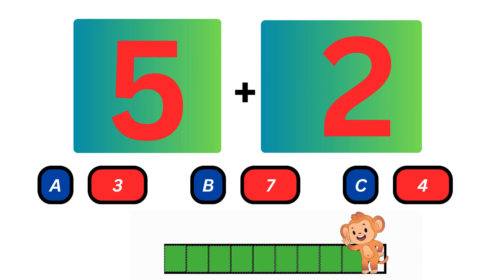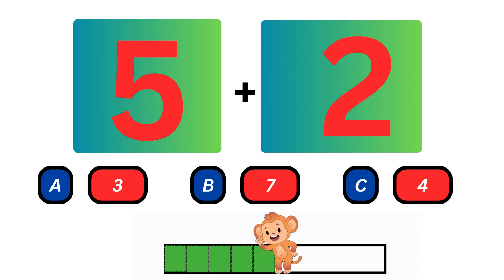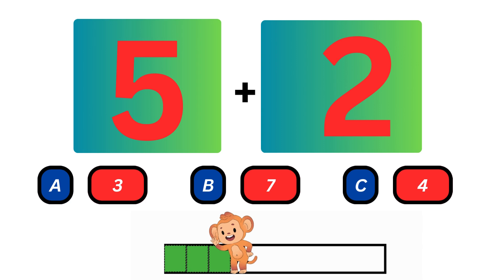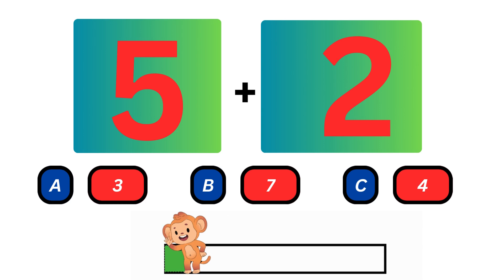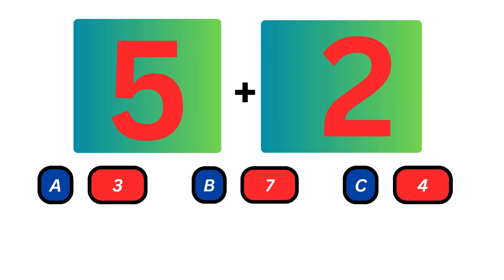What do you get when you add 5 and 2? Use your fingers or some objects for this addition. I hope you got the right answer. When you add 5 and 2 you get 7. The answer is 7.